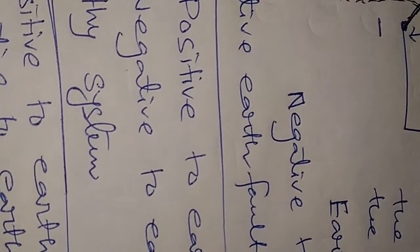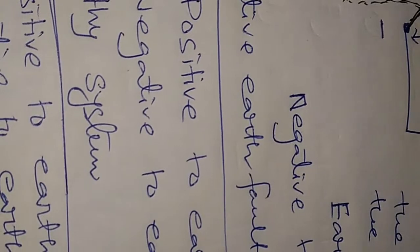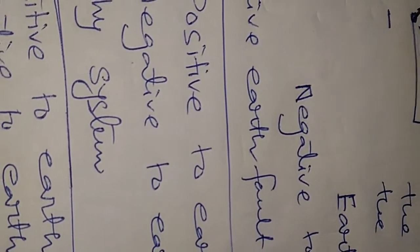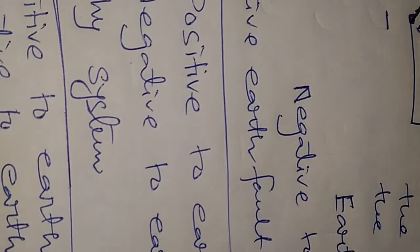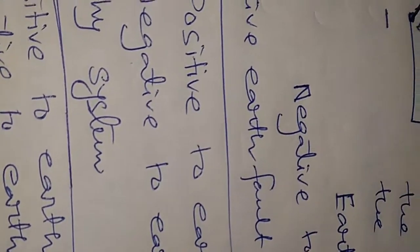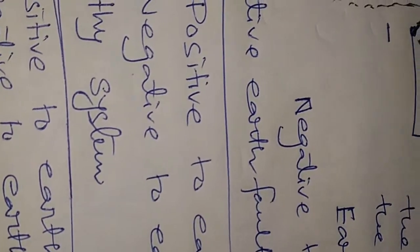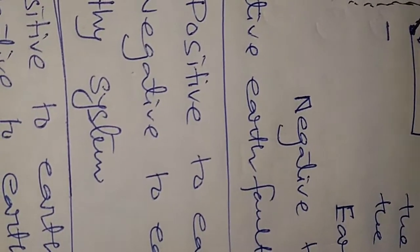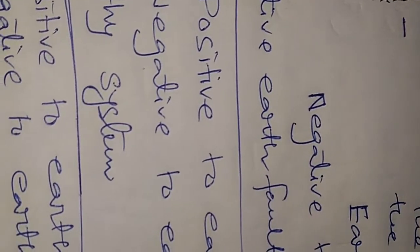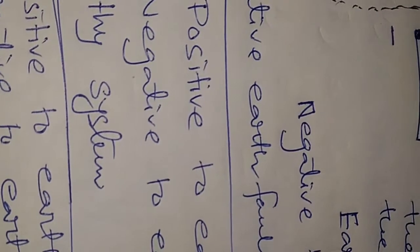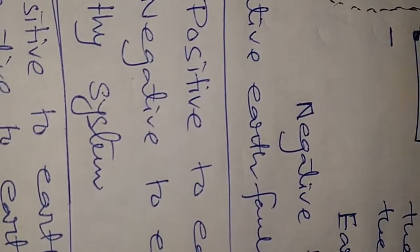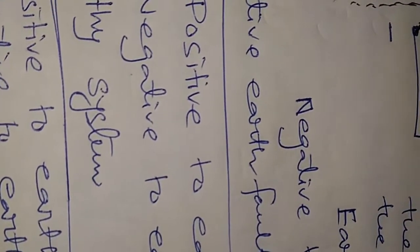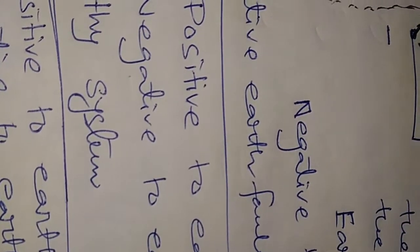If we put the red lead of the multimeter to the negative terminal and the black lead to the earth terminal and it shows zero, we are 100 percent sure that the equipment has a negative earth fault.